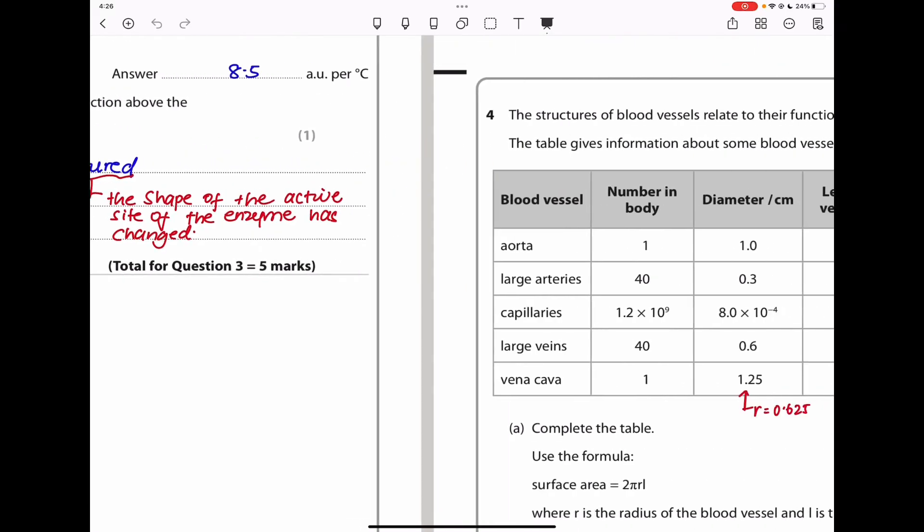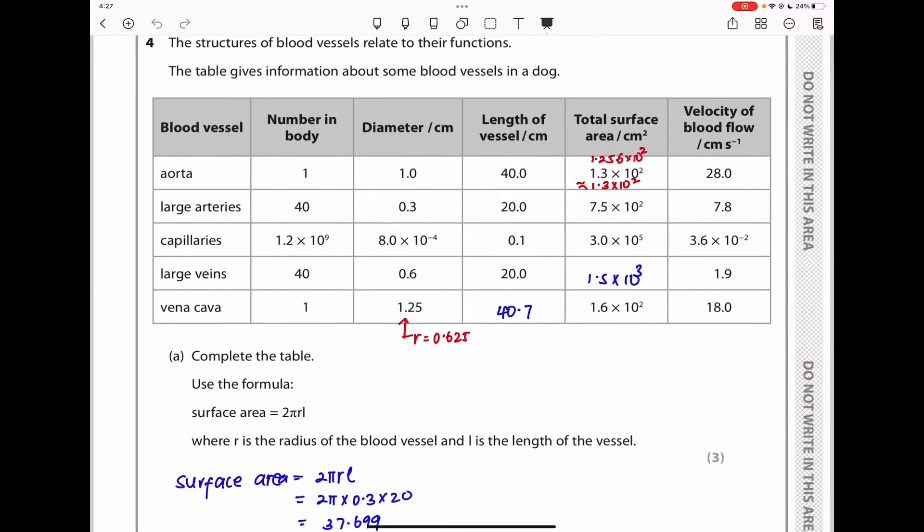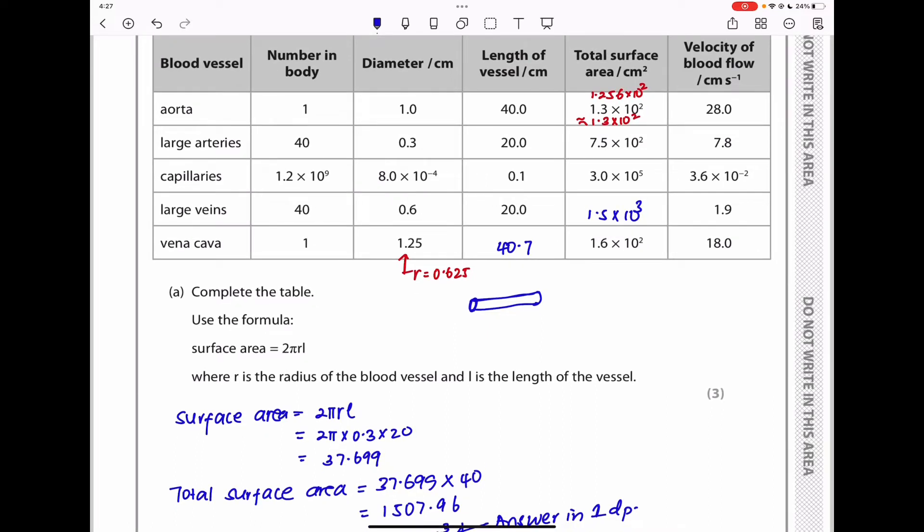Question 4 says the structures of blood vessels relate to their function. The table gives information about some blood vessels in a dog. Complete the table. They want you to use the formula of surface area equals 2πrl. They are assuming that the blood vessel is like a cylinder. Surface area is going to be the circumference times that length. Where r is the radius of the blood vessel and l is the length of the vessel. They wanted us to find this value here and that value there. Total surface area means surface area times the number in the body.